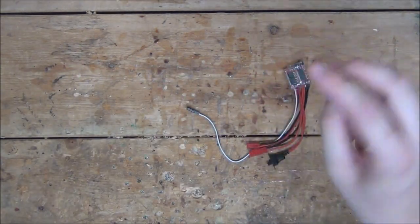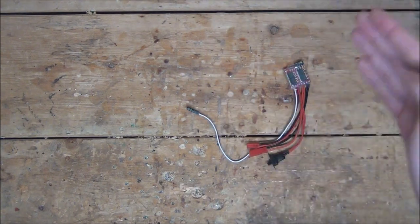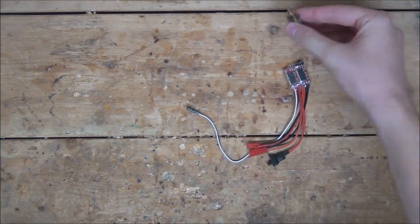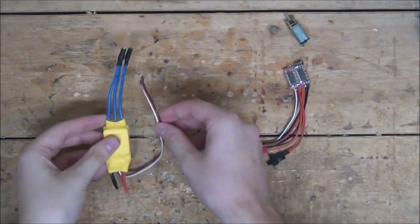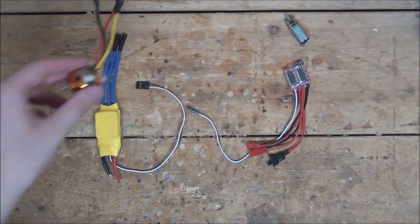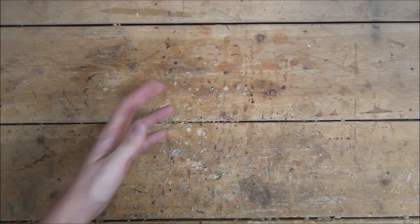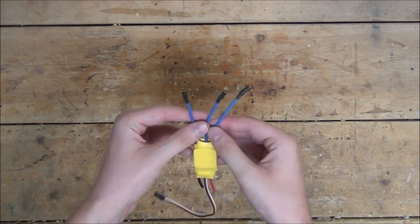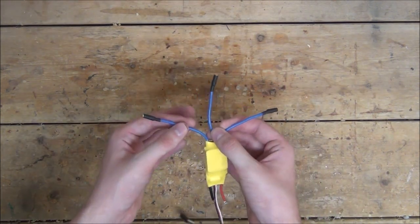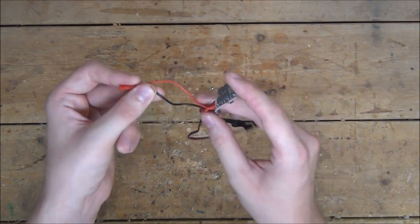Now, there's primarily two different kinds of ESCs. There's brushed ESCs, like this one, that are meant for brushed motors. And then there's brushless ESCs, like this one, meant for brushless motors. An easy way to tell the difference is a brushless ESC will typically have three outgoing wires to connect to the motor, whereas a brushed ESC will only have two.